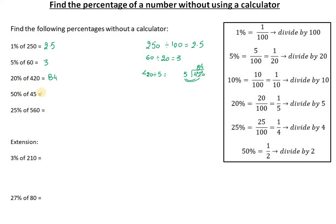50% of 45 - 50% is actually a half, so that should be 22.5. And for the 25% of 560,